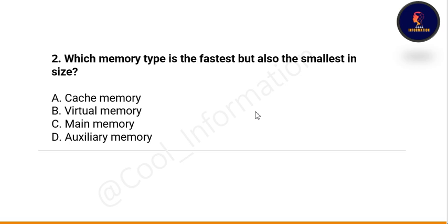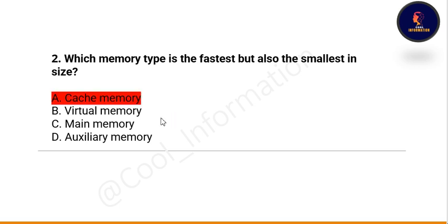Next question: which memory type is faster but also the smallest? Options are cache memory, virtual memory, main memory, or auxiliary memory. The correct option is A — cache memory.